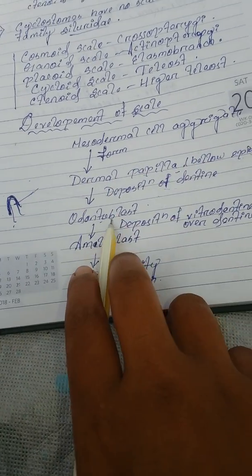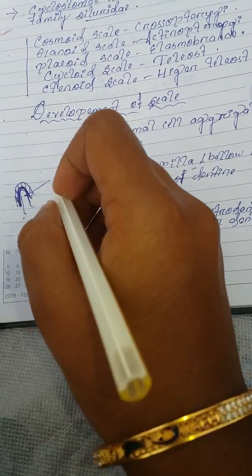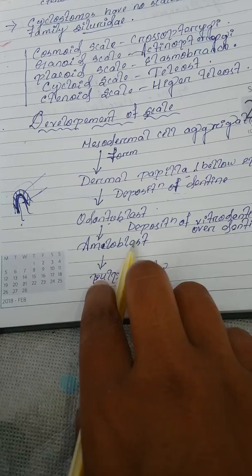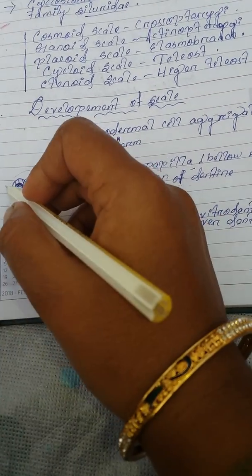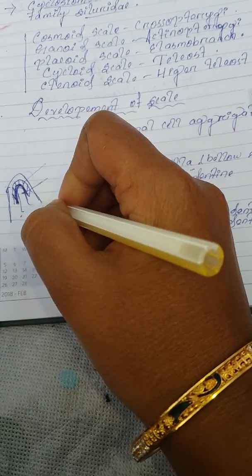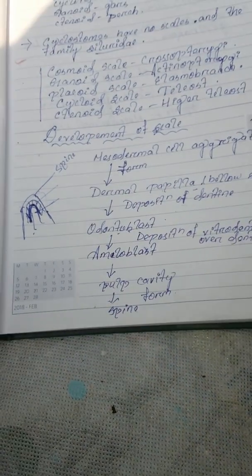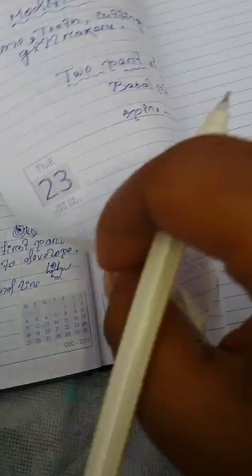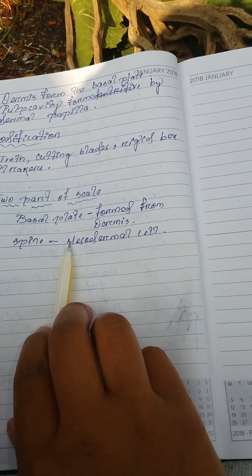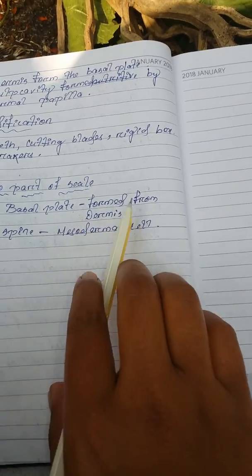After the odontoblast is formed, vitrodentine is deposited again over the dentine — this structure is now called ameloblast. These then form the pulp cavity, which grows to form the spine. There are two parts of the scale: the basal plate and the spine. The spine is formed from mesodermal cells, while the basal plate is formed from the dermis.